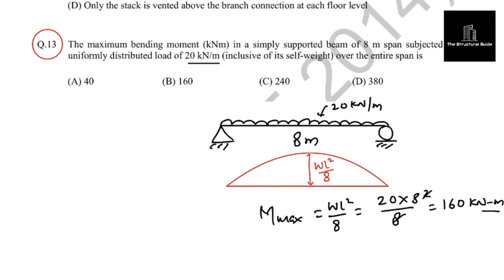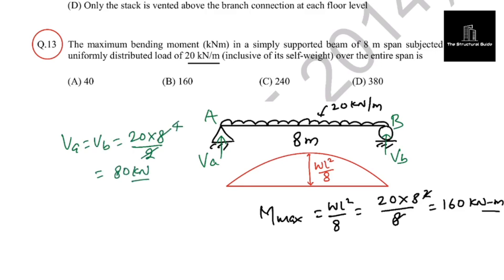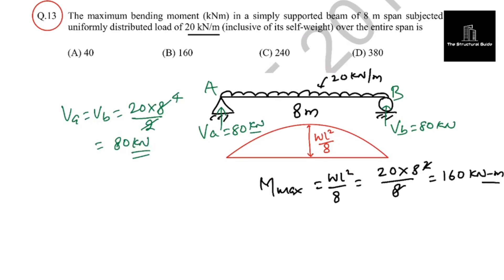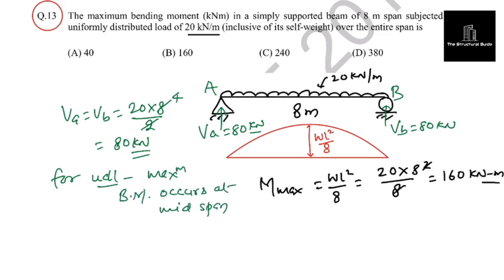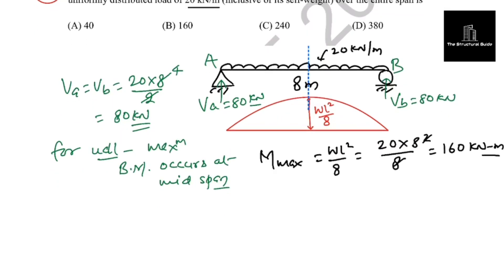Suppose you forgot the formula — here is how to proceed. Since the beam is symmetric, the reactions will be equal. So VA and VB equal 20 into 8 divided by 2, which is 80 kilonewton. For UDL, the maximum bending moment occurs at mid span. Take the moment about the mid-span section 1-1.